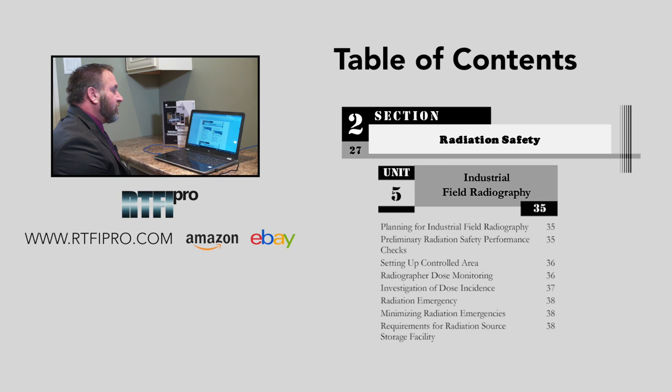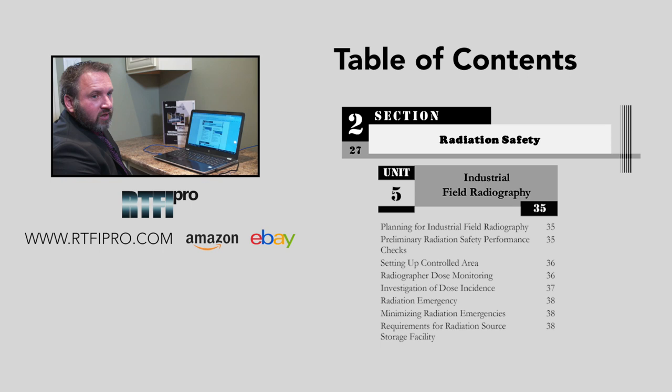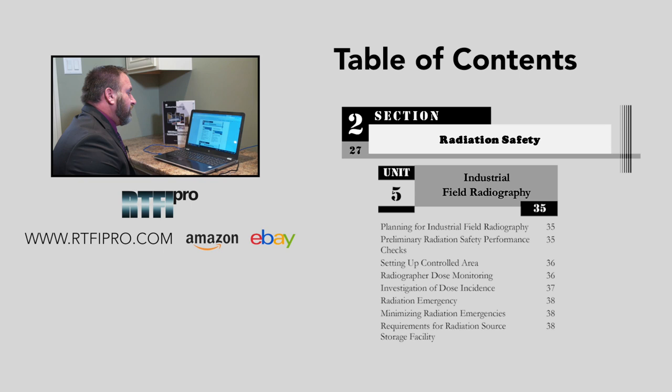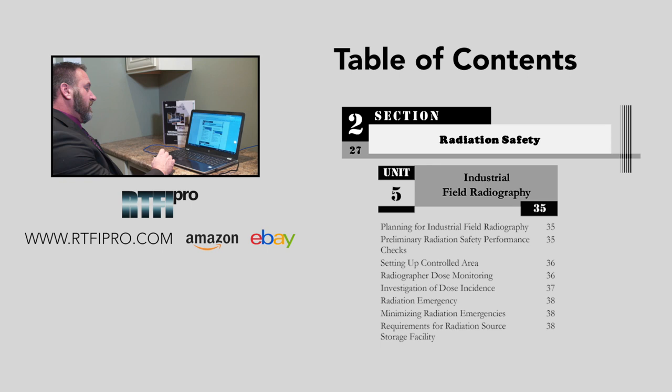Unit five covers industrial field radiography. A great thing about this unit is it addresses the practical side of safety — what happens in emergencies and situations that other techs usually don't address. Topics include planning for industrial field radiography, preliminary radiation safety performance checks, setting up a controlled area, radiographer dose monitoring, investigation of dose incidents, radiation emergency, minimizing radiation emergencies, and requirements for radiation source storage facility.